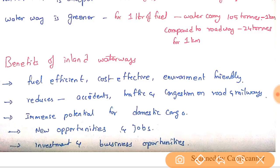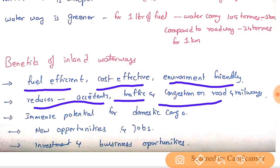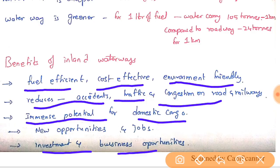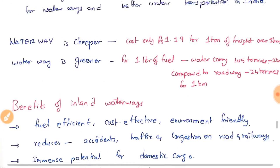Besides the big cost advantage, other benefits of inland waterways are that they are fuel efficient, cost effective, and environmentally friendly. Waterways also reduce accidents, traffic, and congestion on roads and railways. Improved inland waterways divert traffic away from roads, reducing accidents. Inland waterways also have immense potential for domestic cargo and will create more investment, business opportunities, and jobs.